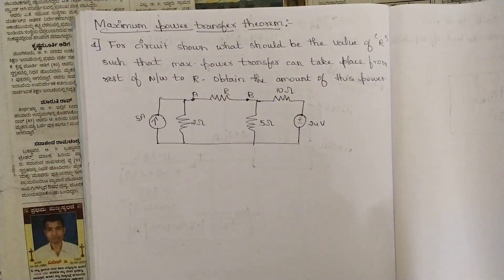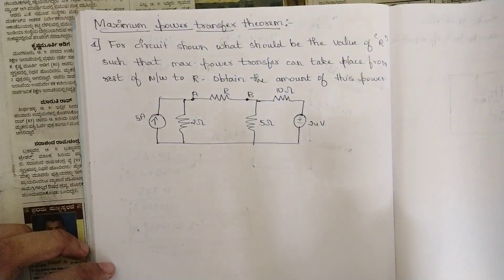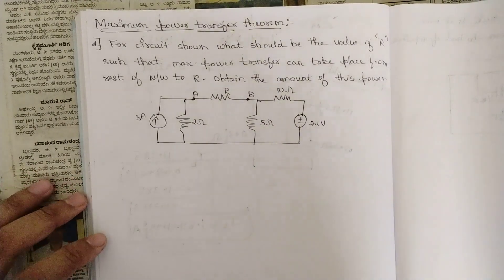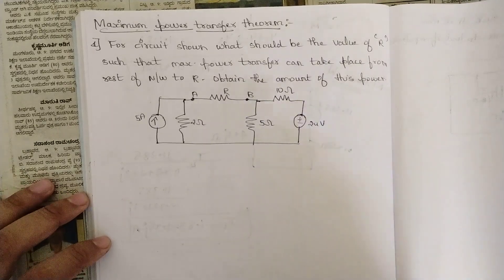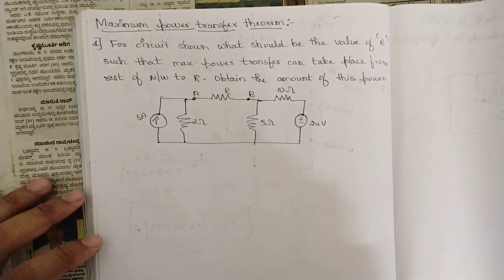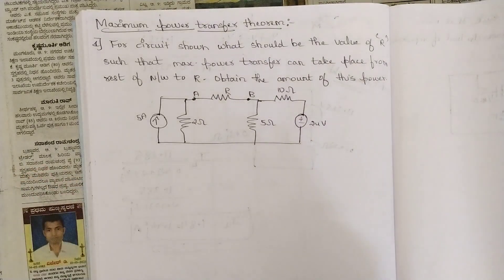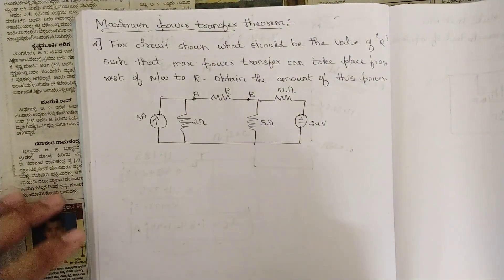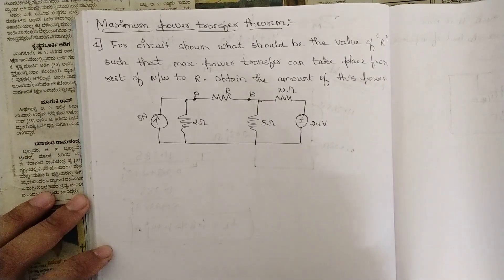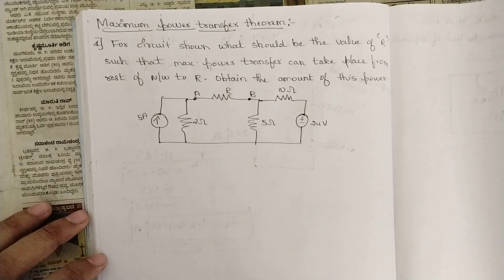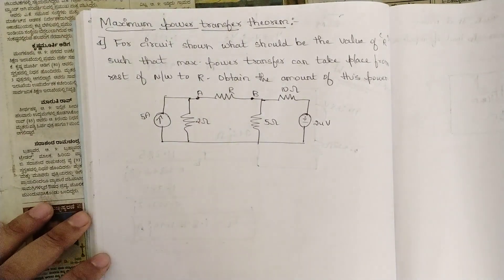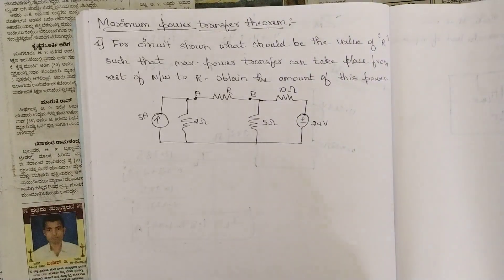Hello everyone, welcome to this new video. In the last video we discussed the maximum power transfer theorem — the statement and proof, which is sufficient as that is fixed content. Whether problems related to maximum power transfer will come is uncertain, but in case they do, they are very easy to solve. The condition of maximum power transfer is R_th equal to R_L, and the maximum power formula is P_max = Vth² / 4R_L.